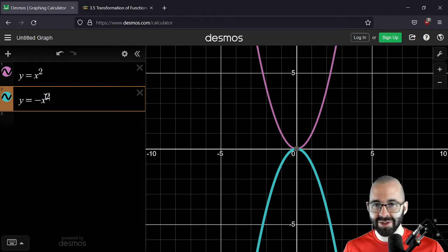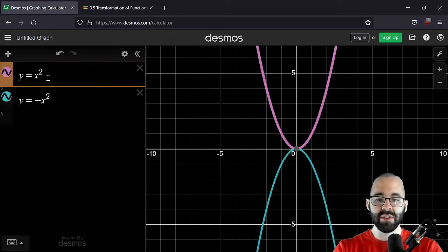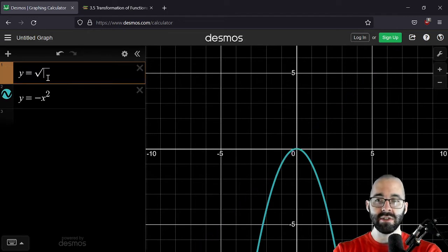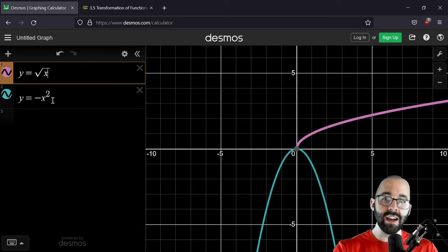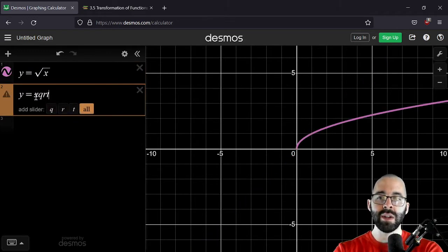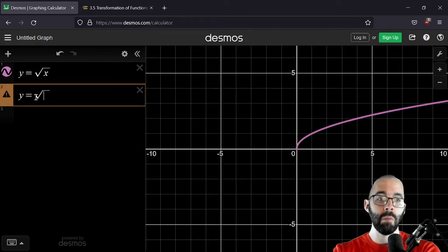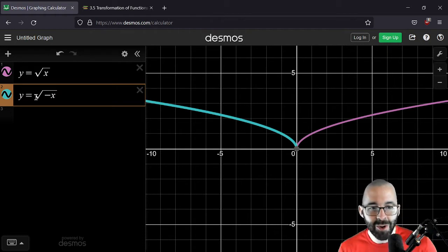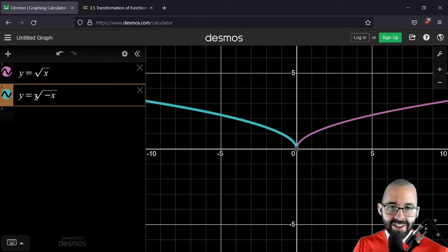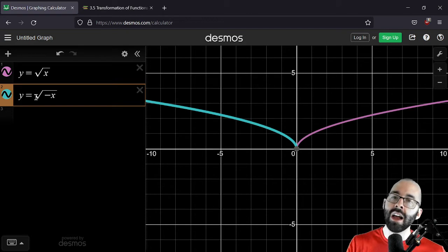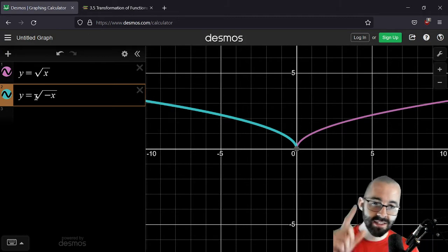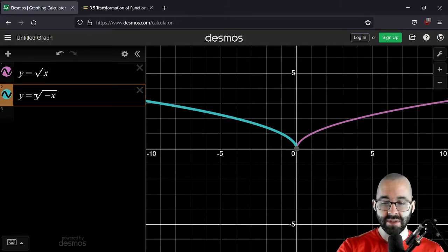Flips it upside down. And so similarly, if doing something on the outside of the function reflects it over the x-axis, doing something on the inside of the function, who could have seen that one coming? A negative on the inside is a horizontal change, a horizontal reflection, a reflection about the y-axis. And that's how we're going to fill in our table today.